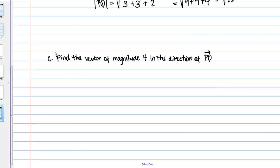Finally, in part C, we want to find the vector of magnitude 4 in the direction of PQ. We looked at a problem like this back when we were working with vectors in two dimensions. Now, what we need to do first is find a unit vector in the direction of PQ. If you remember how to do that, the unit vector in the direction of PQ, I'm going to call it U for unit vector. In general, to find a unit vector in the direction of any given vector, we just take that vector and divide it by its magnitude.